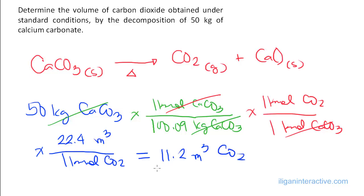At STP—standard temperature and pressure, which is 0 degrees Celsius or 273.15 Kelvin and one atmosphere absolute—the volume of carbon dioxide produced from the decomposition of 50 kilograms of calcium carbonate will be 11.2 cubic meters.